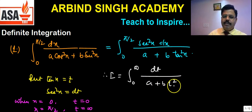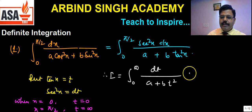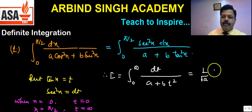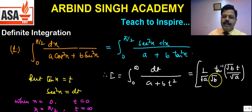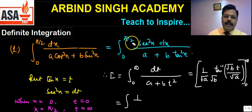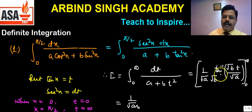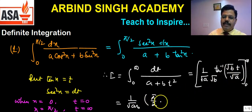Using the standard formula for ∫dt/(a² + x²) = (1/a)·tan⁻¹(x/a), we get (1/√(ab))·tan⁻¹(√b·t/√a) evaluated from 0 to ∞. Since tan⁻¹(∞) = π/2 and tan⁻¹(0) = 0, the result is π/(2√(ab)).